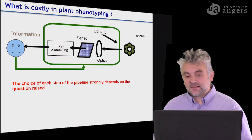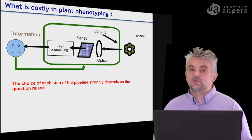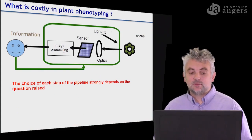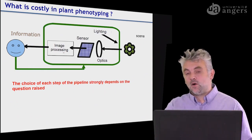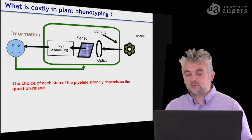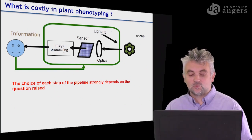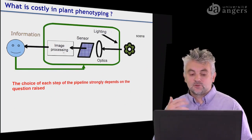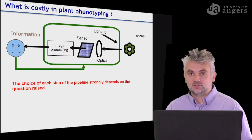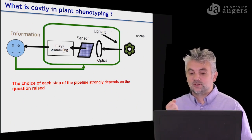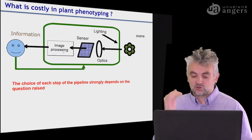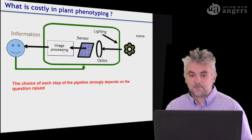Let's analyze step by step in this computer vision pipeline of plant image phenotyping what can be costly. All these elements have to be thought of as a whole, because the choice of each step of the pipeline strongly depends on the question raised. It is with this kind of approach that you will manage to decrease the cost of your imaging system.